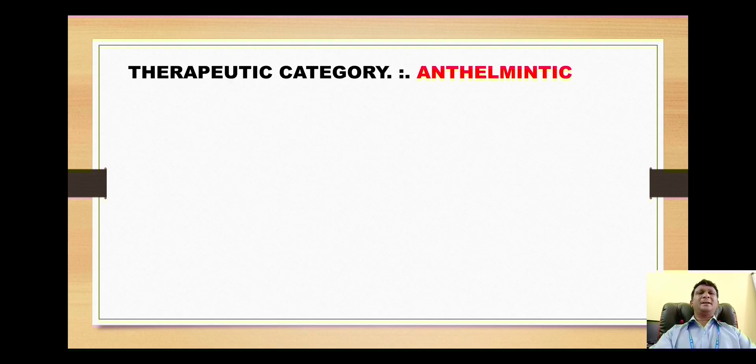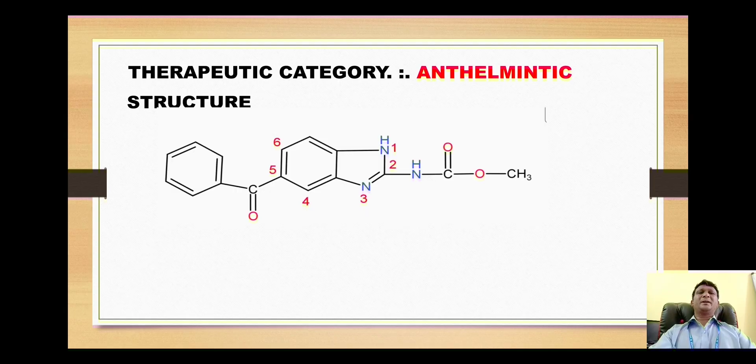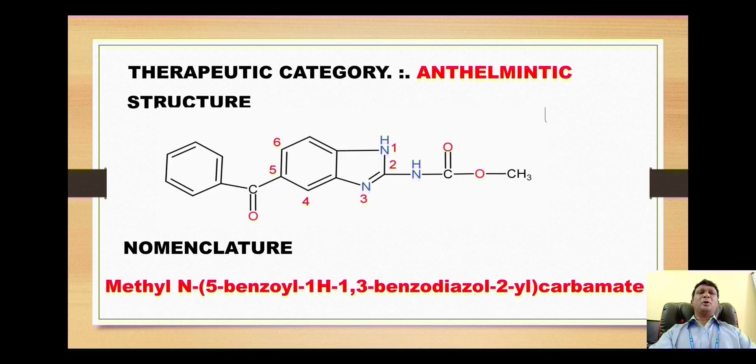Now look at the structure. This is the structure for mebendazole and this is the IUPAC nomenclature of this structure. If you look at the IUPAC name, you will find that it is the methyl ester of this carbamic acid, so it is called as methyl carbamate followed by the salt form carbamate.